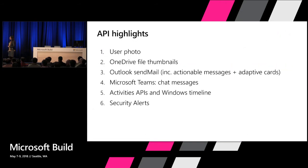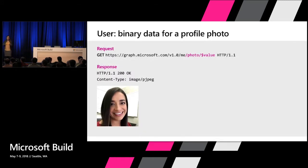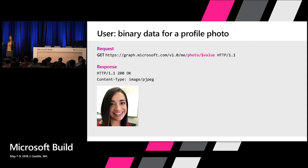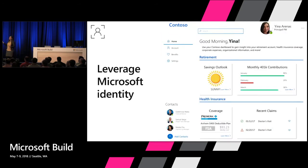The APIs we're going to highlight are: user photo, thumbnails, sending mail with adaptive cards and actionable messages, Teams, Activities, and Security. Let's start with the simplest one. If you want to integrate with Microsoft Graph, the simplest thing you can do is provide a personalized experience using profile information. No more filling out a different username and password. Calling to get a picture is as simple as calling slash photo slash value, and you can leverage Microsoft identity to provide a personalized experience in your application.